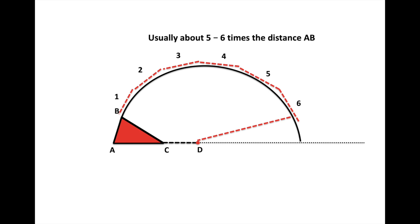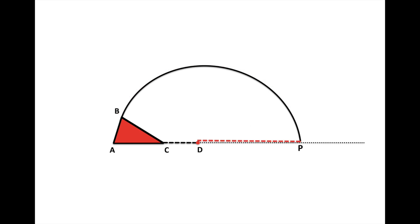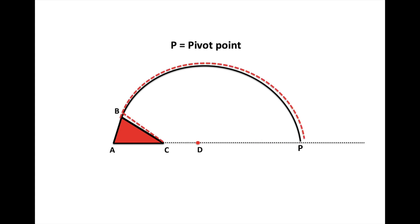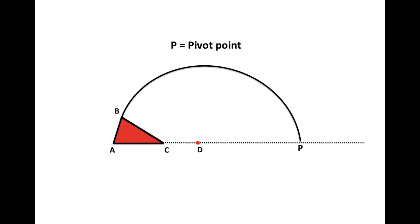It does not matter if the flap is not covering the defect at this point. The arc can further be rotated up to the diameter of the circle formed by the extension of the side AC of the triangular defect. The arc of rotation can only be marked till point P and not beyond it. Point P is the pivot point of the rotation flap, and the line extending from the pivot point to the leading edge of the flap is called the line of maximum tension. This is the marking for the classical or conventional rotation flap.